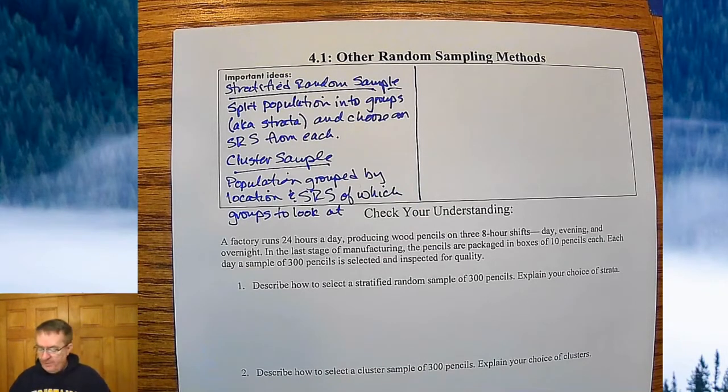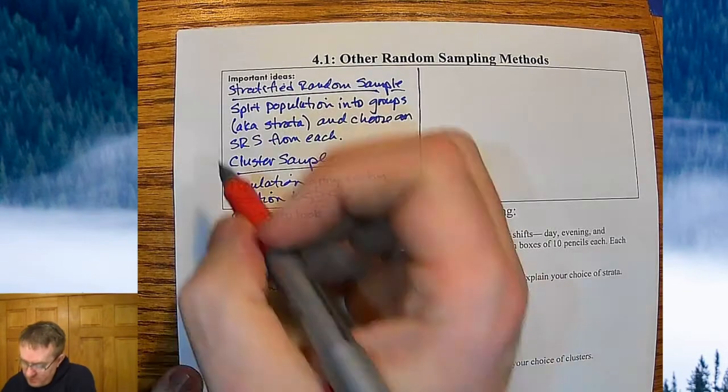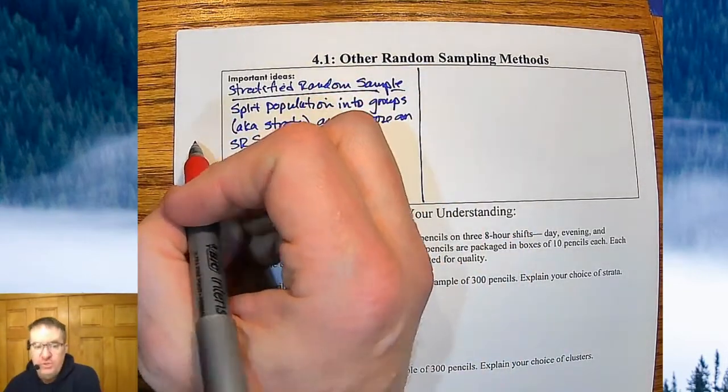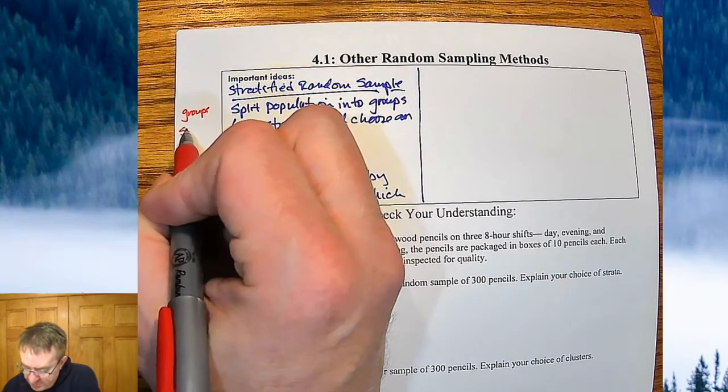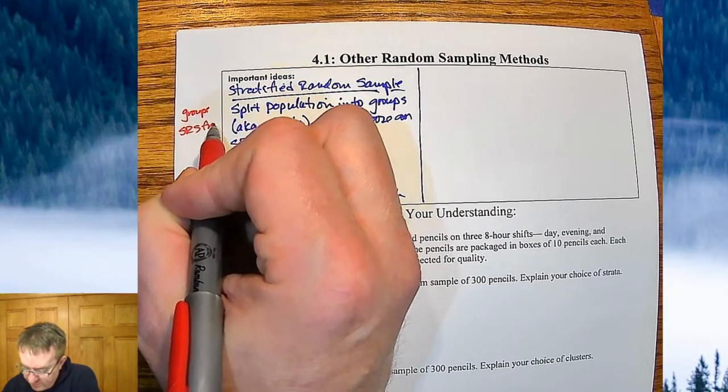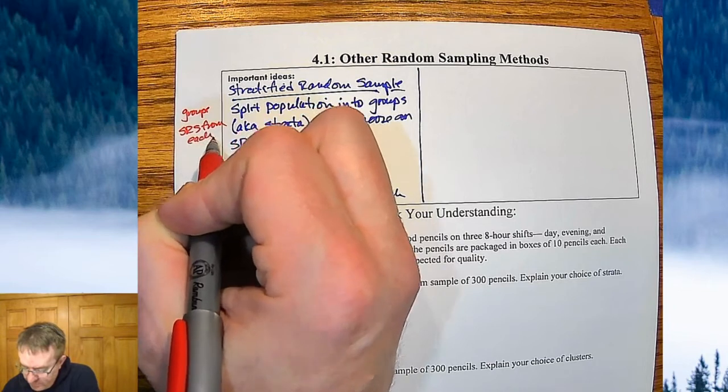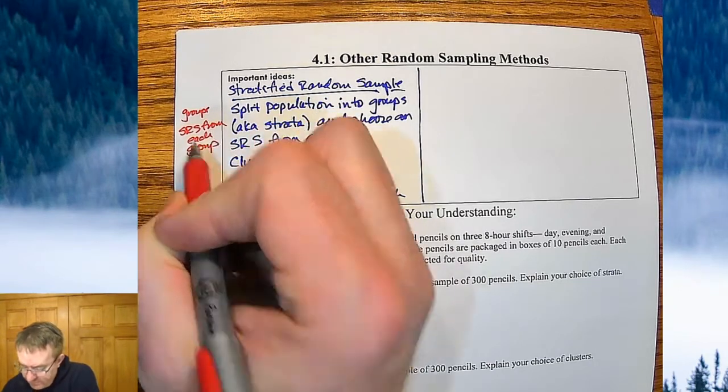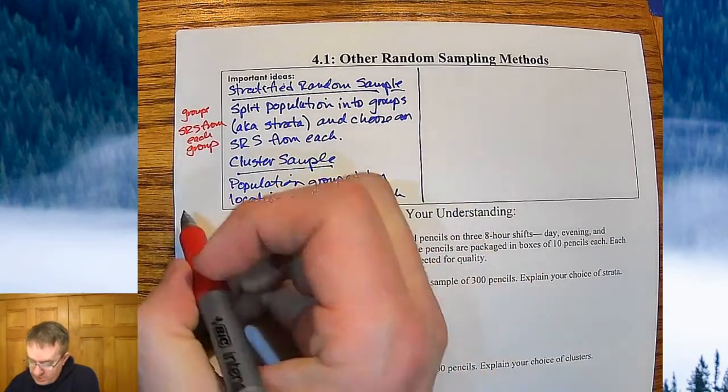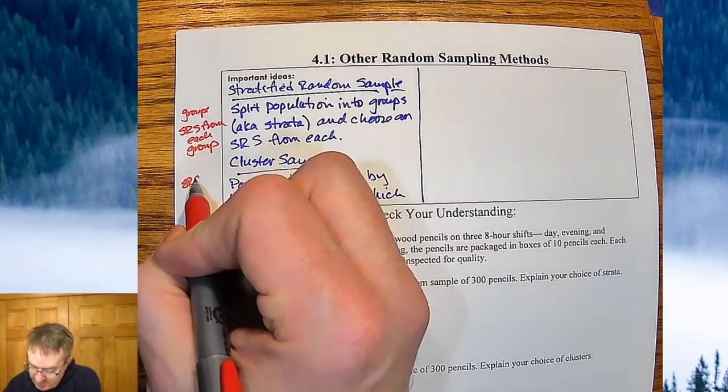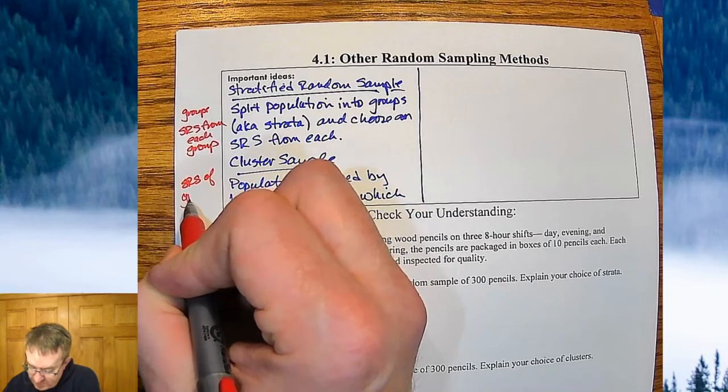Here's the difference. With stratified, you're going to have your groups and you're going to do a simple random sample from each group. Here, with clusters, what you're going to do is find a simple random sample of groups to look at.